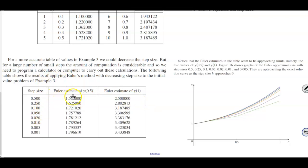So here's your step size, here's your Euler estimate of y(0.5), and Euler estimate of y(1). So if you notice that the Euler estimates in the table seem to be approaching limits, namely the true values of y(0.5) and y(1).